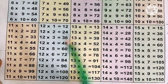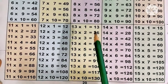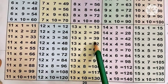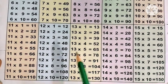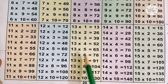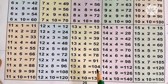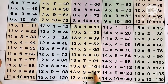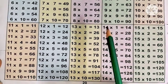Now the 13 times table. 13 ones are 13, 13 twos are 26, 13 threes are 39, 13 fours are 52, 13 fives are 65, 13 sixes are 78, 13 sevens are 91, 13 eights are 104, 13 nines are 117, 13 tens are 130.